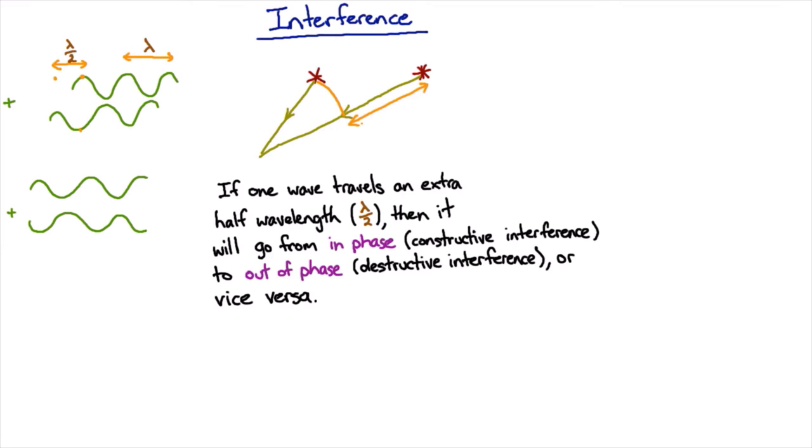If that's an even number of half wavelengths, they're going to be back in phase and then you're going to have constructive interference. So if we look around this area, we'll find all sorts of different points.